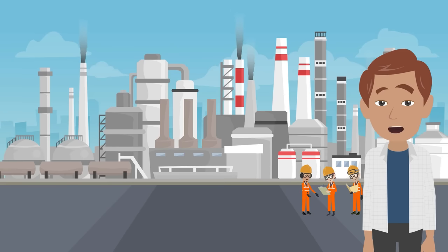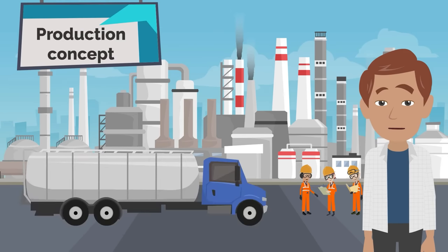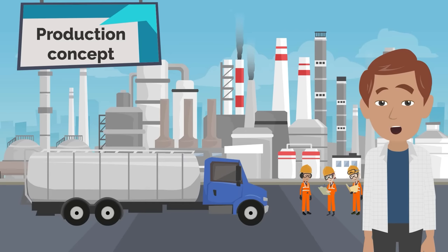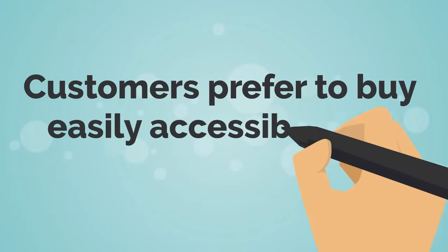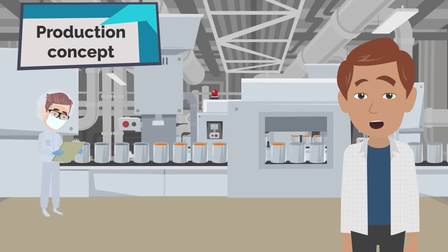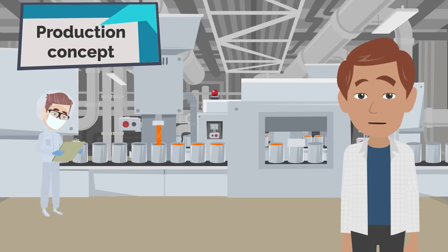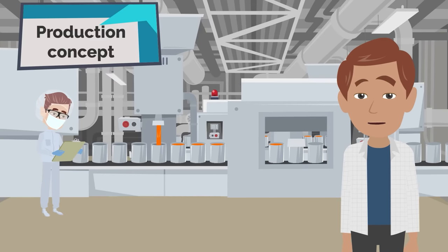The production concept is the oldest of all orientations related to sales. Its origins are believed to be industrialization. It focuses on production and starts with the belief that customers prefer to buy products that are easily accessible and affordable. Thus, an organization representing the production concept should primarily improve the efficiency of production and distribution processes.